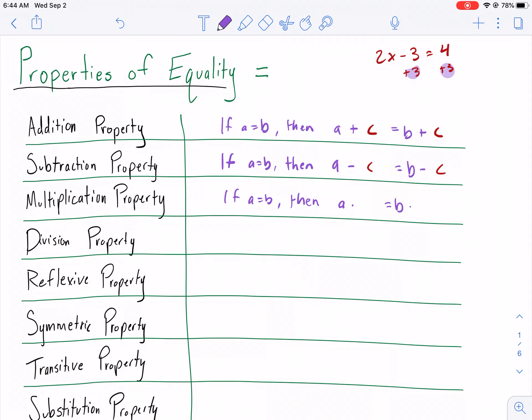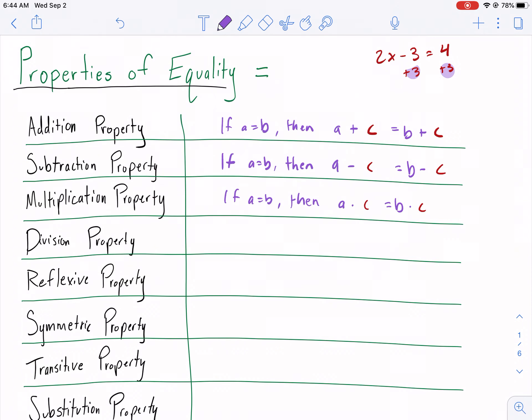Multiplication property. Hopefully, you guys are getting the pattern. If A equals B, then A times C equals B times C. What I would do here if I were watching this video for the first time is I would just skip ahead and go to the end and just copy down and pause it because the commentary is pretty basic because there's not much to say because you guys have used these rules so much.